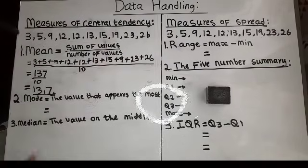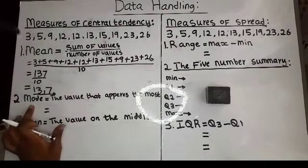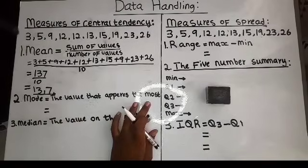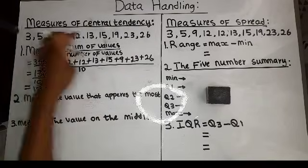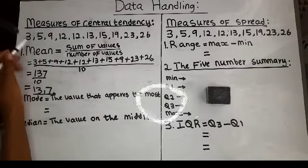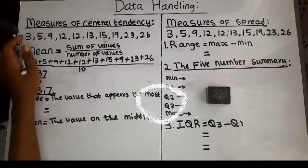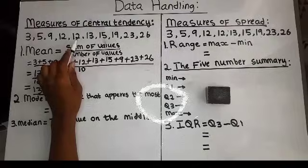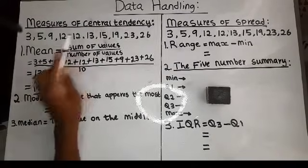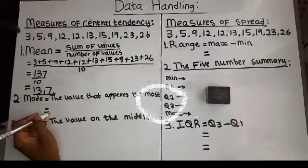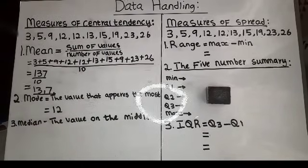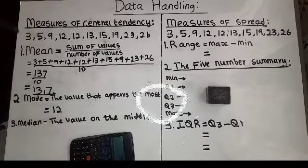Now we go to the mode, the second measure of central tendency. The mode is the value that appears the most in the sequence. When we look at the values we have been given, the number that appears the most is 12 because it appears three times. So the mode is 12.